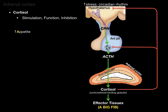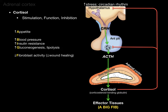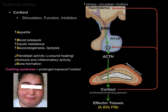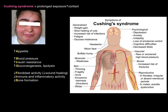Cortisol affects tissues throughout the body — increasing appetite, blood pressure, insulin resistance, and gluconeogenesis. It decreases fibroblast activity and thus wound healing, suppresses the immune and inflammatory systems, and decreases bone formation. We use the mnemonic 'a big fib' to remember these effects. If you have a hypersecretion of cortisol — prolonged elevated cortisol levels — one result is Cushing's syndrome.